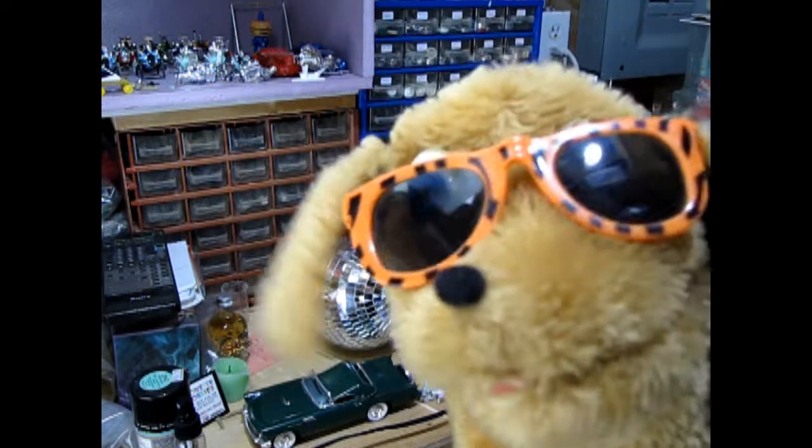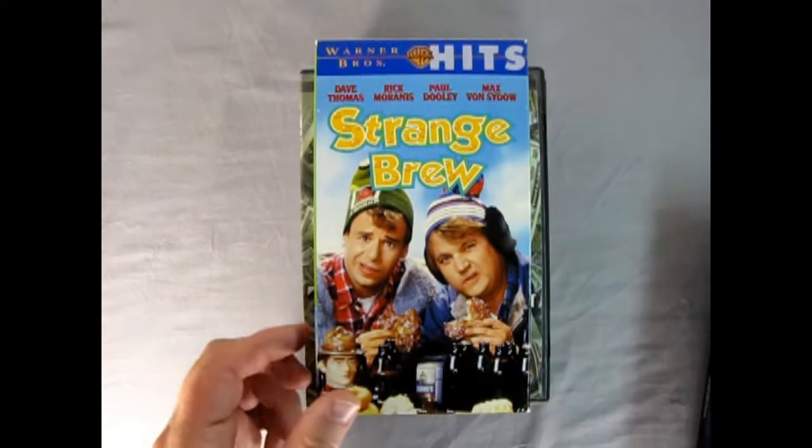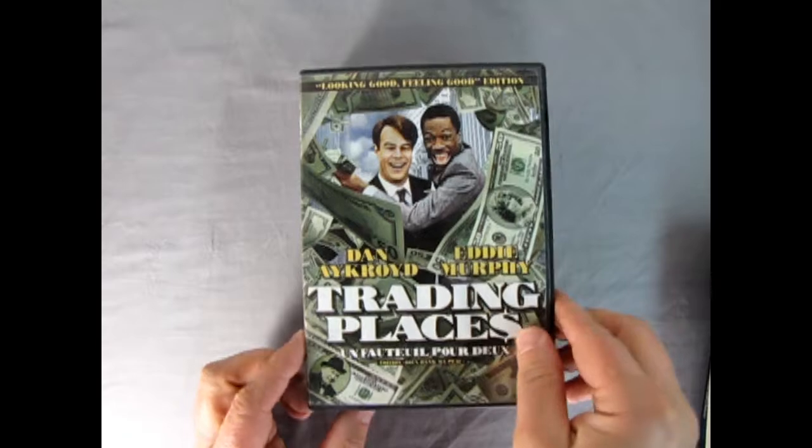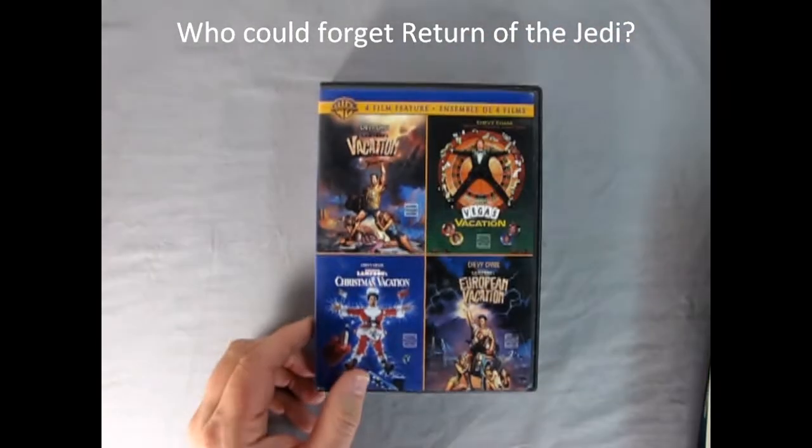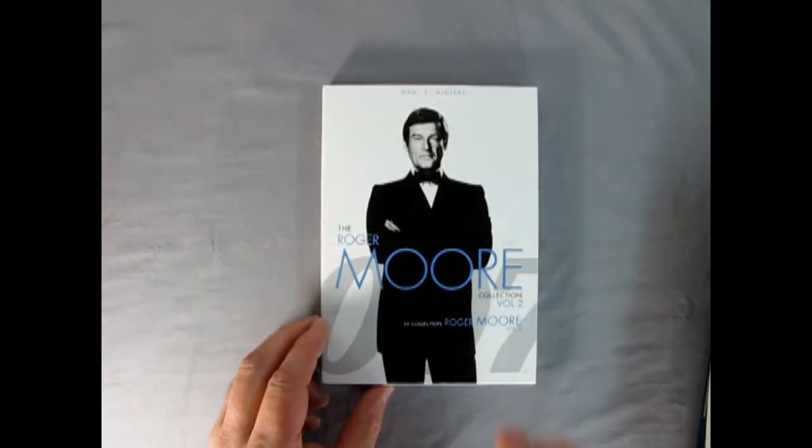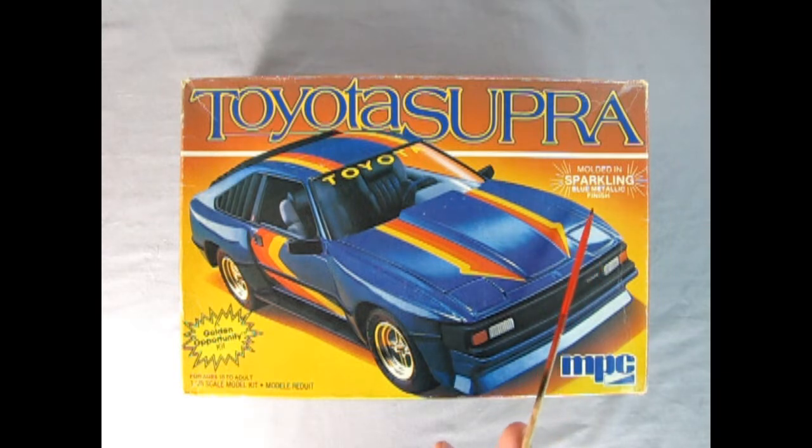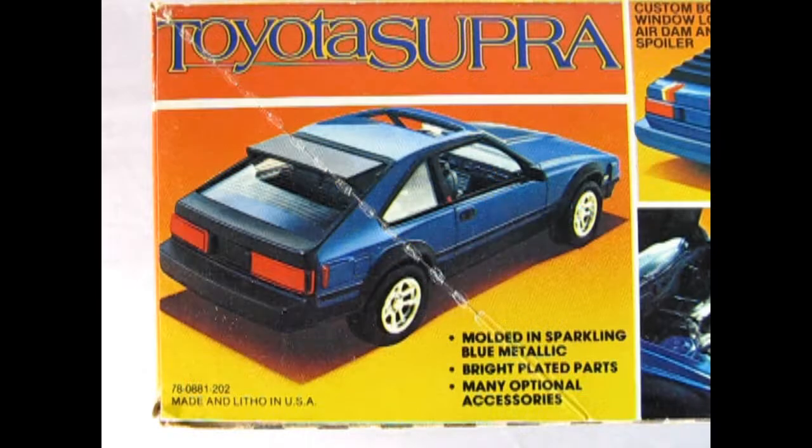1983 saw some really amazing movies - we got such greats as Christine, Cheech and Chong Still Smoking, Strange Brew, Trading Places, Zelig, the beginning of the vacation series with National Lampoon's Summer Vacation, and even Roger Moore in Octopussy. And we also got this really amazing Toyota Supra model kit by MPC. This one was molded in sparkling blue metallic finish and was a golden opportunity kit in 1/25th scale for ages 10 to adult.